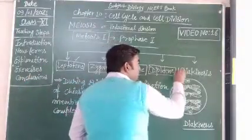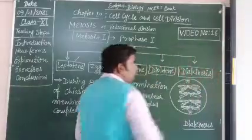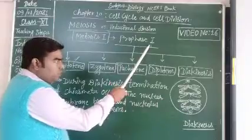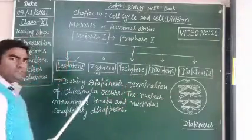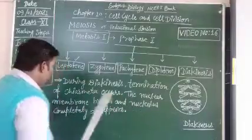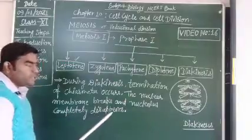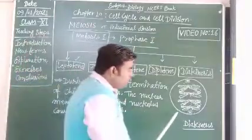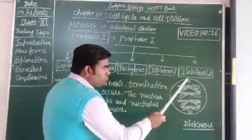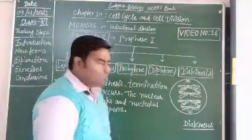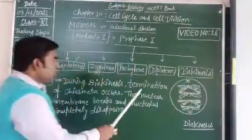Dear friends, Diakinesis is the last phase of Prophase I. During Diakinesis, the termination of the chiasmata occurs, and the nuclear membrane breaks, and the nucleolus completely disappears. You can see here the figure of Diakinesis, in which the chromosomes are moved towards both the opposite poles and chromosomes become separated and terminate.